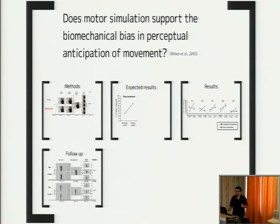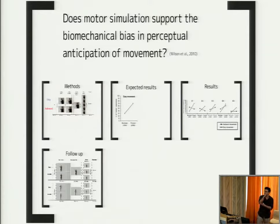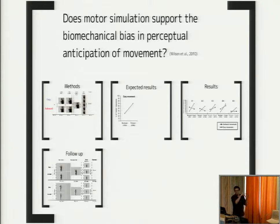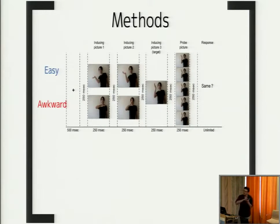But still, motor simulation might be particularly important when it comes to explaining very basic aspects of perception — such as our tendency to systematically perceive the position of a moving body part slightly ahead of its real position, which is called a perceptual anticipation bias, or how this bias is modulated by implicit knowledge we have about body biomechanics. To test this hypothesis, we used a task in which participants' performance can reveal these two perceptual biases.